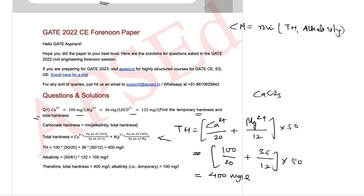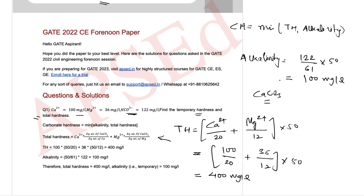Applying the formula: calcium is 100 mg/L, so 100/20; magnesium is 36 mg/L, so 36/12 — all times 50. This gives total hardness as 400 mg/L. For carbonate hardness, the formula is the minimum of total hardness and alkalinity. Alkalinity from bicarbonate (122 mg/L) is 122/61 × 50 = 100 mg/L as CaCO₃. So carbonate hardness = minimum(400, 100) = 100 mg/L. That is the required answer.